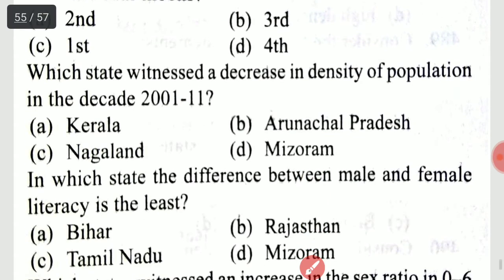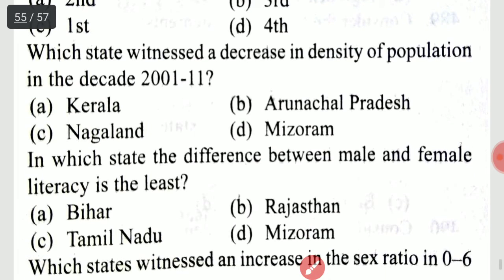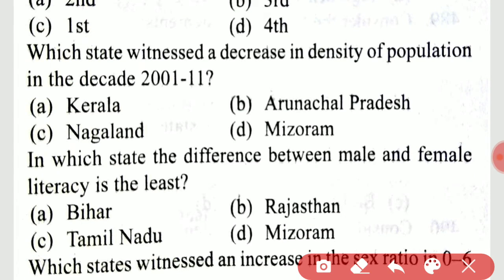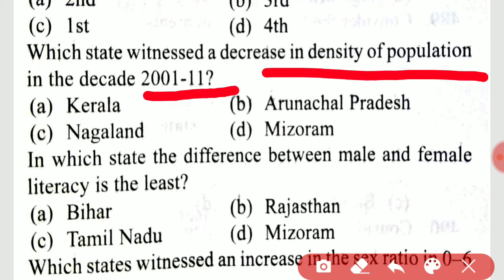Which state witnessed a decrease in density of population in the decade 2001 to 2011? The answer is option C, Nagaland.